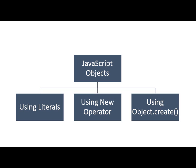As we have discussed earlier, JavaScript objects can be created in 3 different ways. It can be created using literals, it can be created using the new operator, and it can be created using the static function object.create.